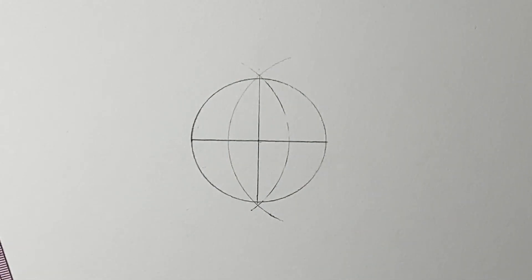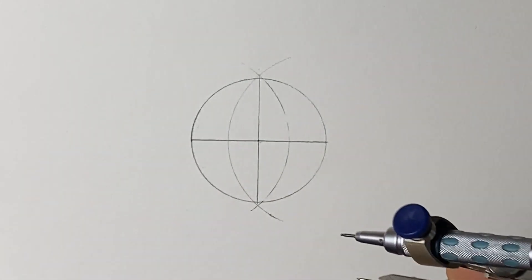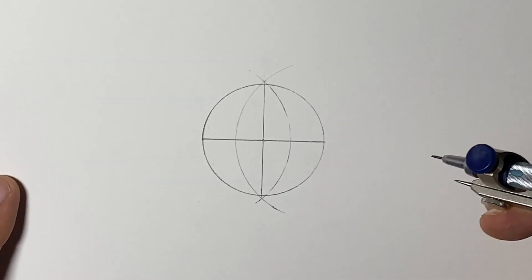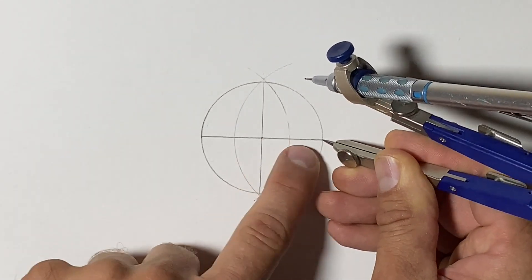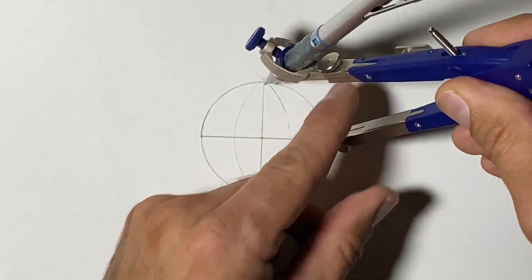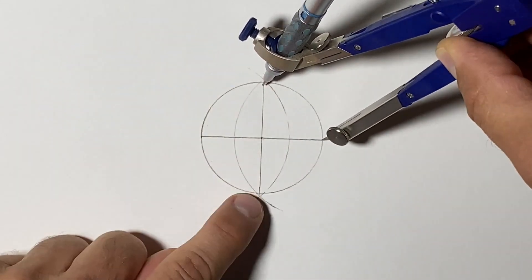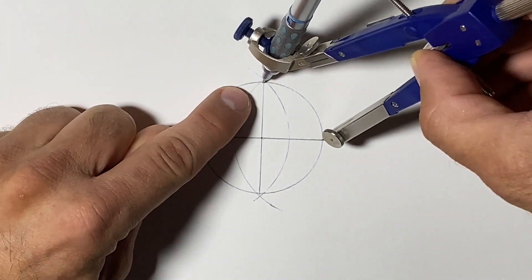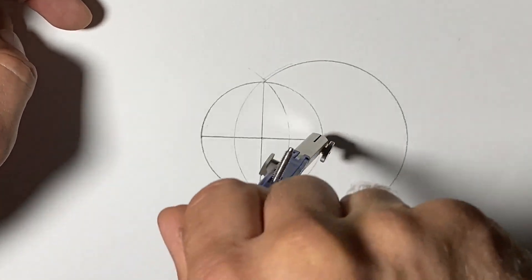The second step will be to take our compass and place the point of the compass on one of the intersecting points where the line and the circle meet. We're going to adjust the compass so that it's touching the one on the top and the bottom with our pencil. That's the distance to the next curve. We'll make this curve here.